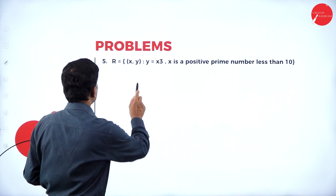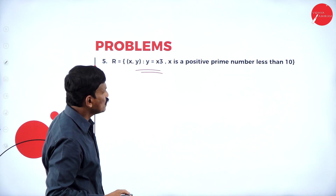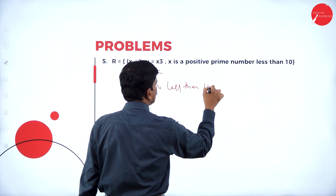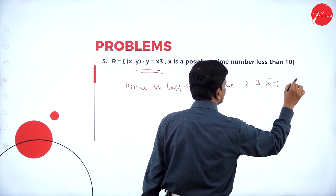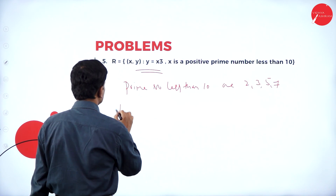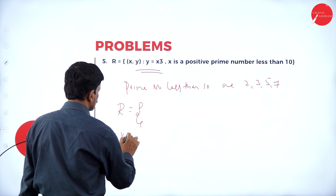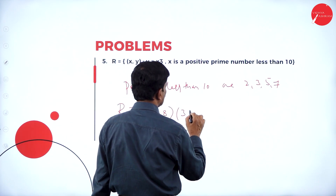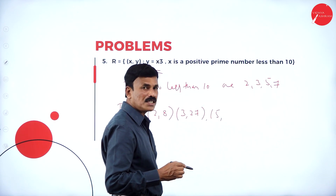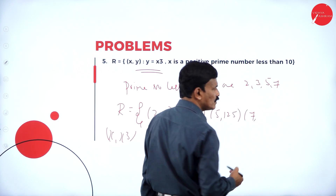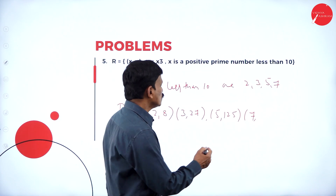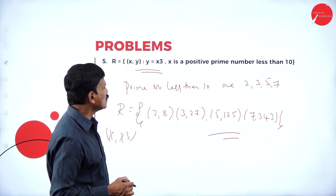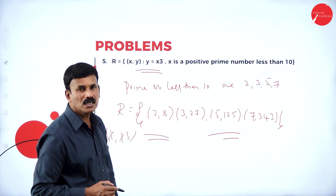Now the next problem: R = {(x, y) such that y = x³} where x is a positive prime number less than 10. Prime numbers less than 10 are 2, 3, 5, and 7. So the relation is: (2, 8), since 2³ = 8; (3, 27), since 3³ = 27; (5, 125), since 5³ = 125; and (7, 343), since 7³ = 343. This is the relation (x, x³).